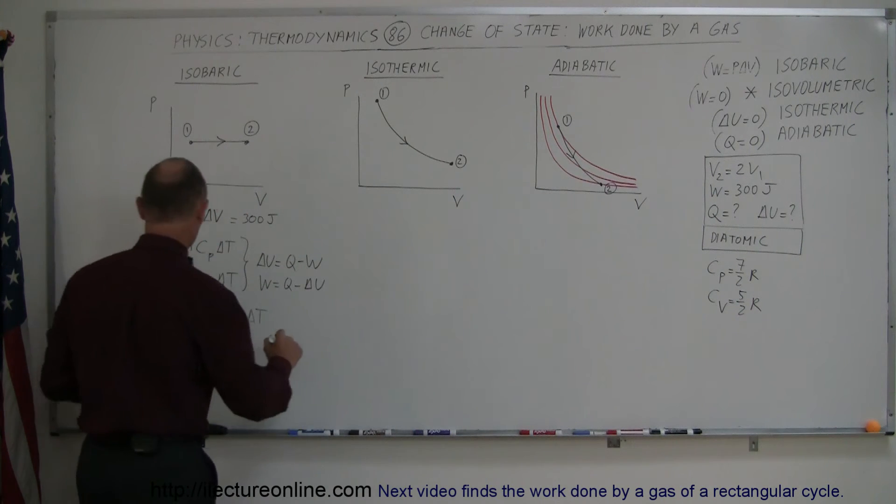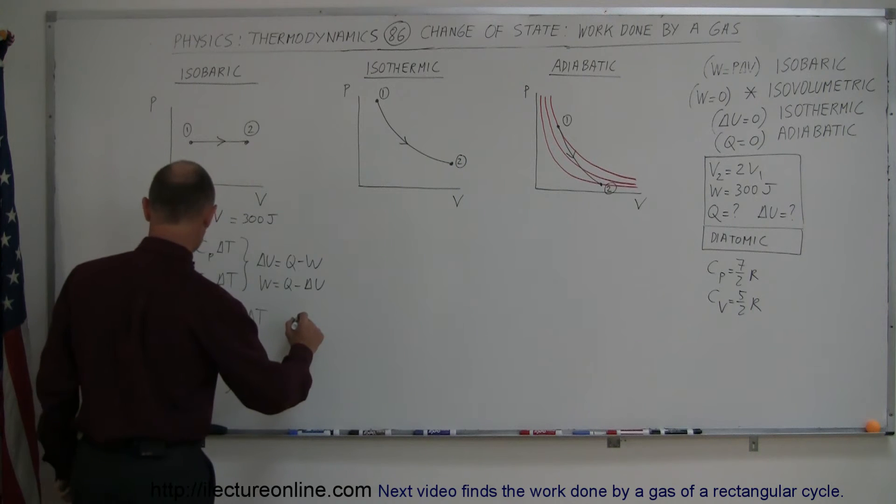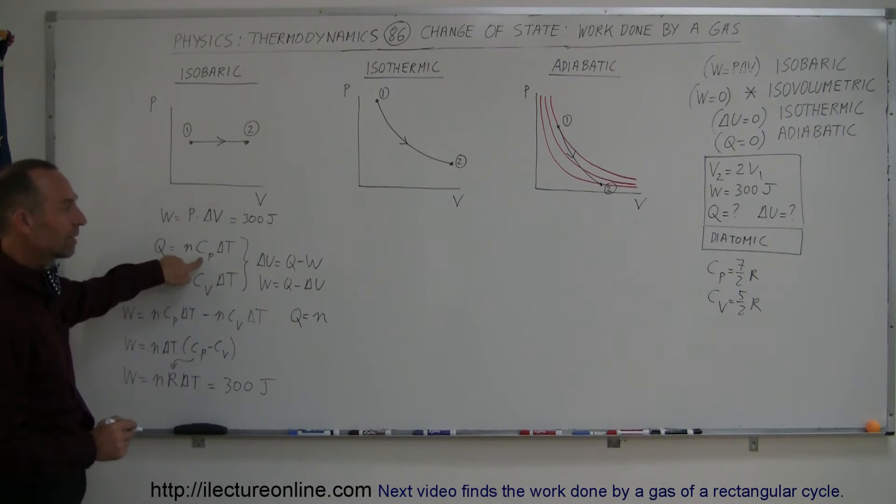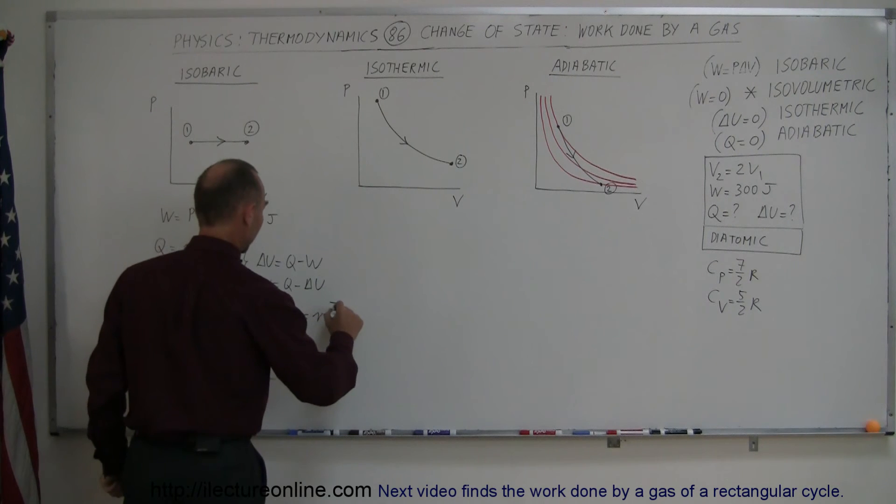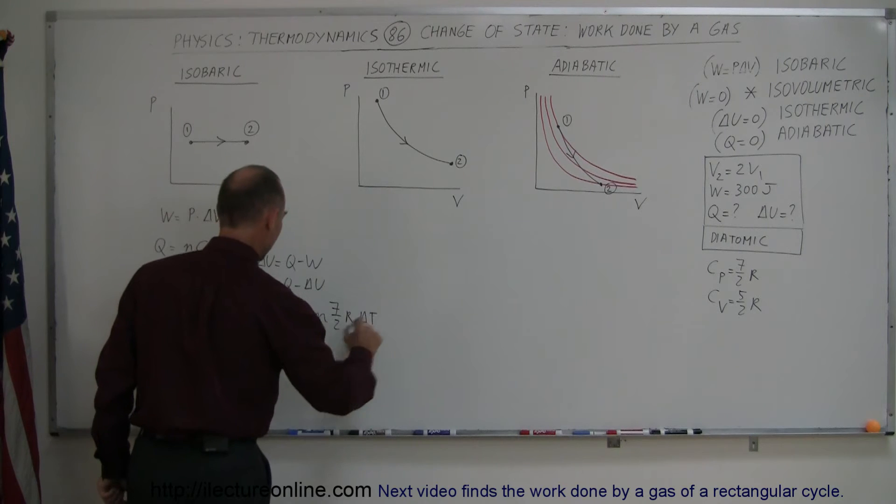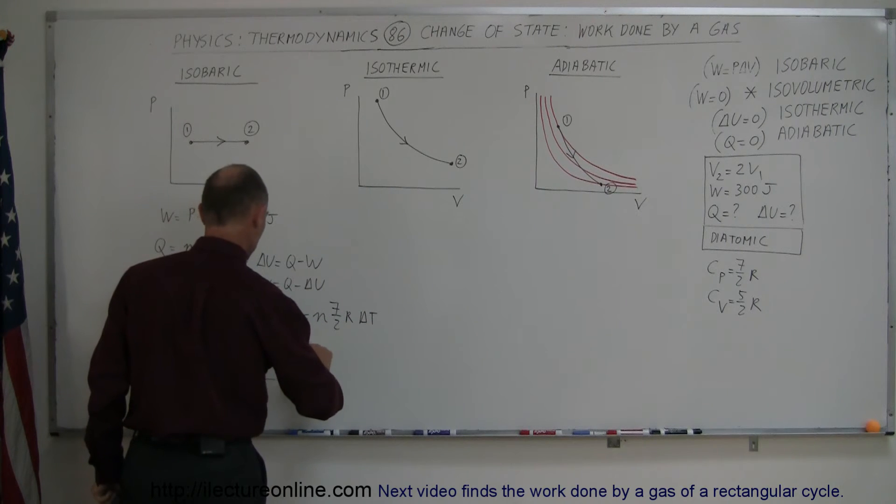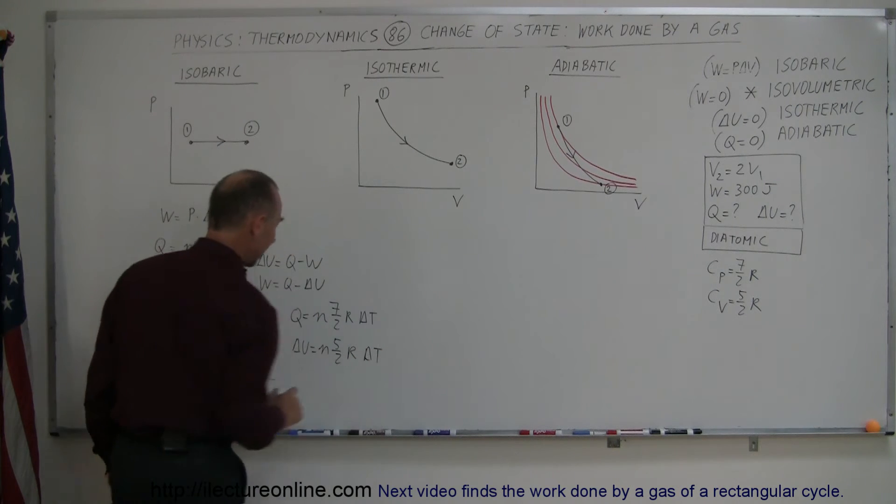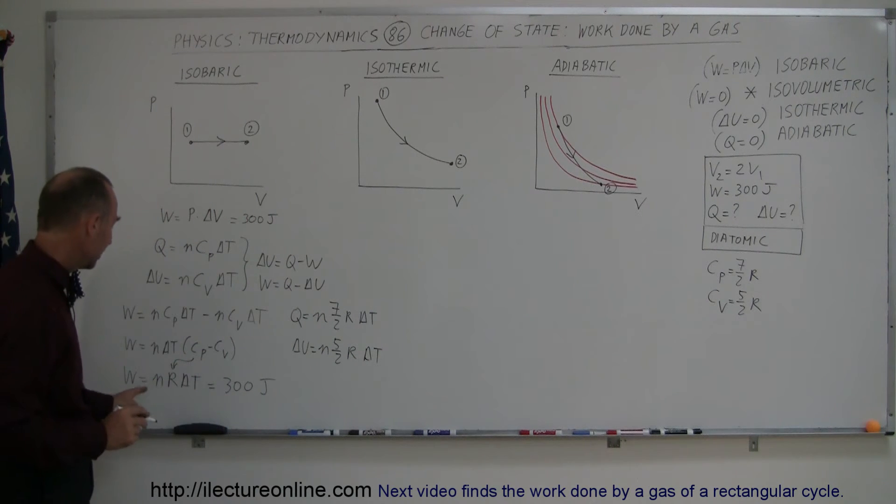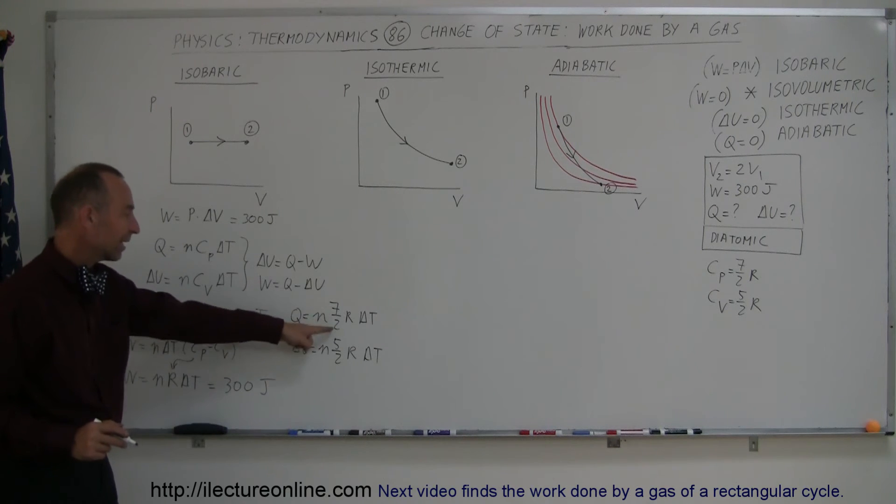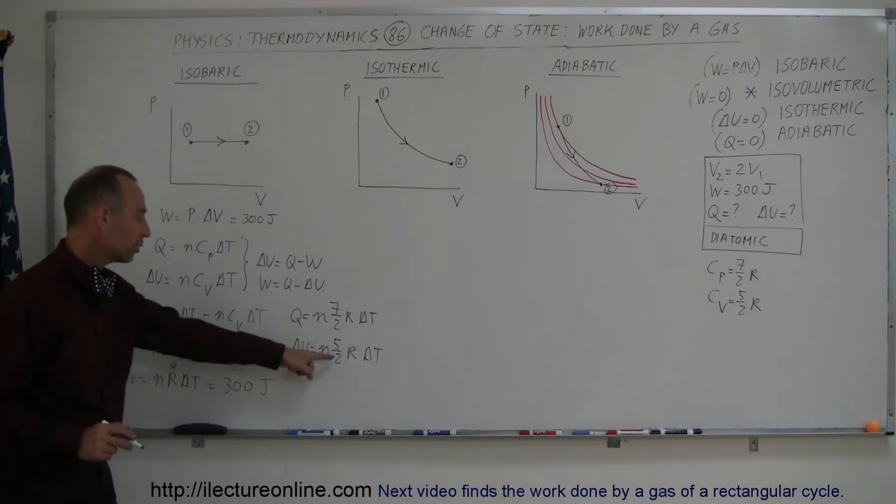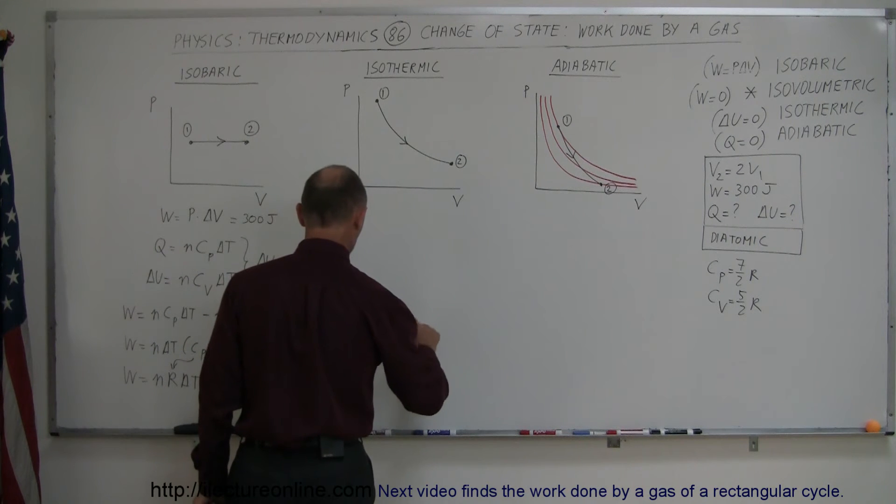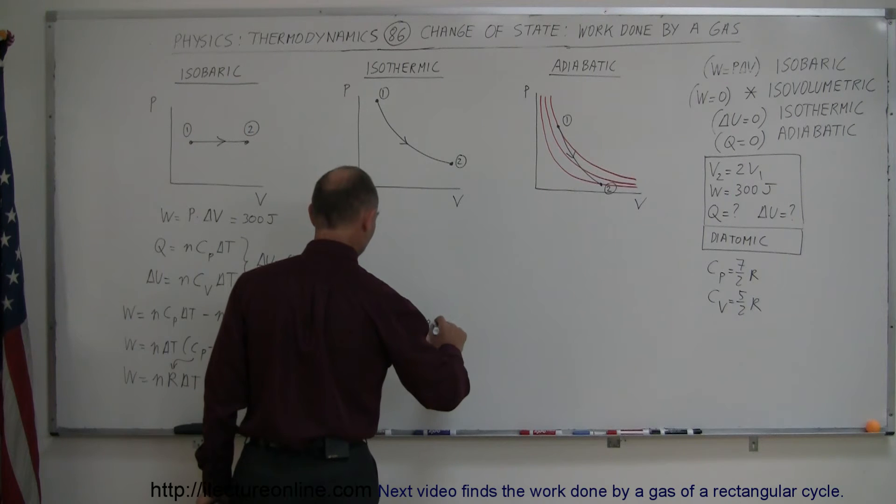Then we can plug that in here, and we can then say that Q is equal to N times C sub P, 7 over 2 R, 7 over 2 R times delta T. And notice that N R delta T is equal to 300, so that means that Q would be 7 halves times 300. So that would be 7 over 2 times N R delta T.